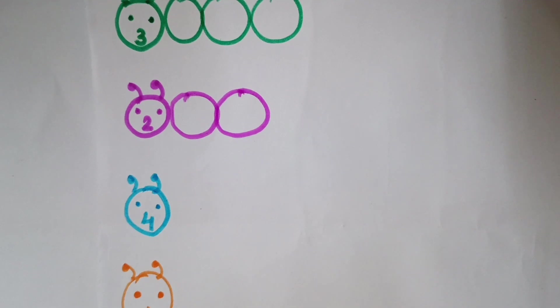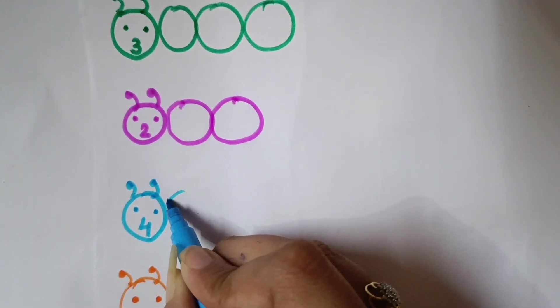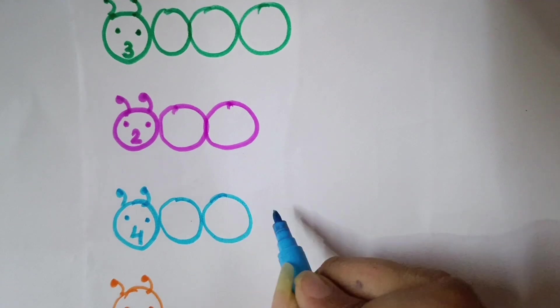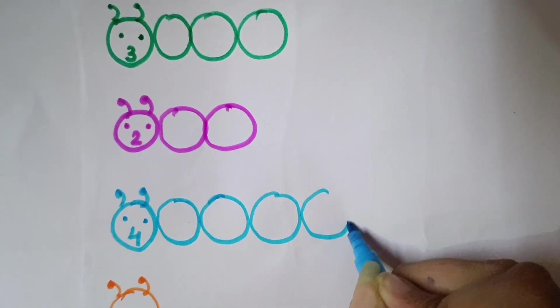Next is 4. So, we will draw here 4 circles. 1, 2, 3 and 4.